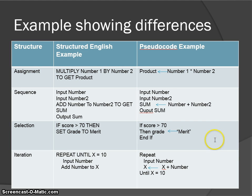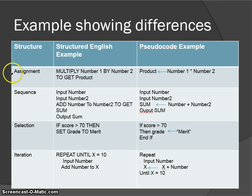And here is the pseudocode equivalent. We use an arrow to mean put inside, or preferably assigned. This is saying number one times number two is assigned to a variable called product. And we've got our keyword there: assignment. Assignment really means that the result of a calculation is placed into something, with that arrow representing assignment.